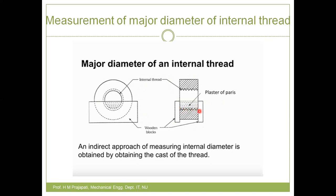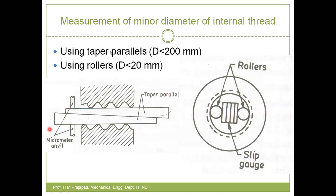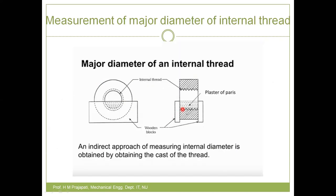Once you get a replica of the thread in plaster of Paris or wax, you can perform any measurement on it using previous methods. This is how you can do major diameter measurement for internal threads. In the next video, I will be explaining how to measure the effective diameter of external threads, where again there are some indirect methods.